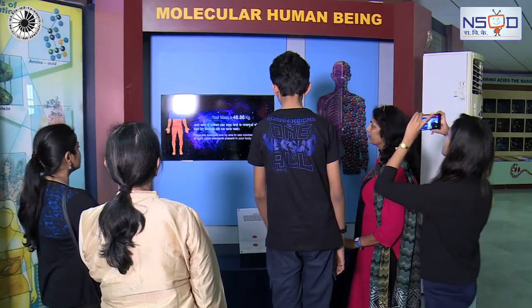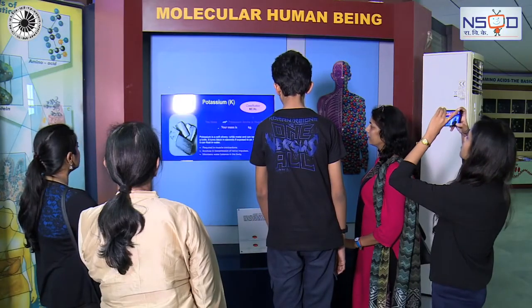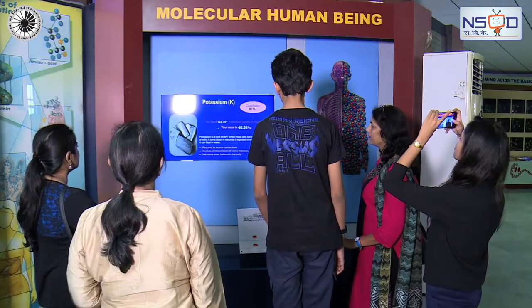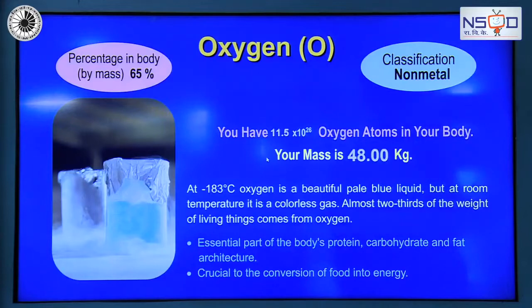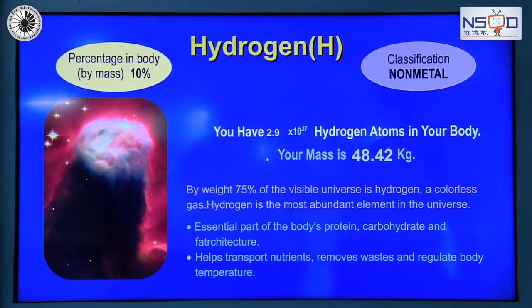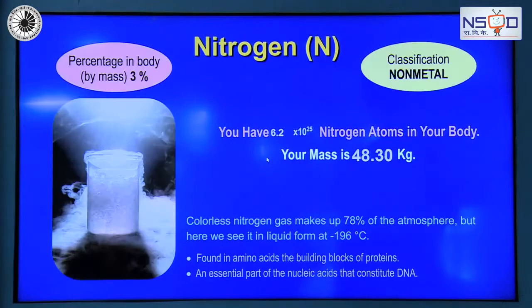The human body is composed primarily of 4 elements: Oxygen, Carbon, Hydrogen, and Nitrogen.